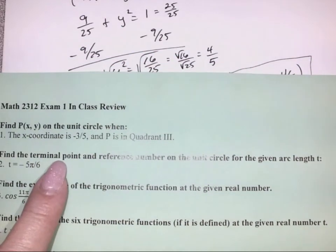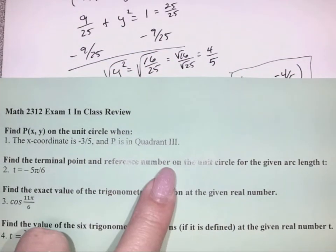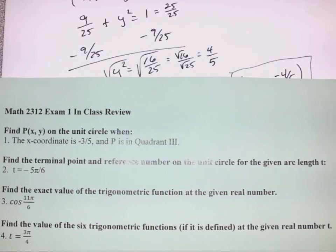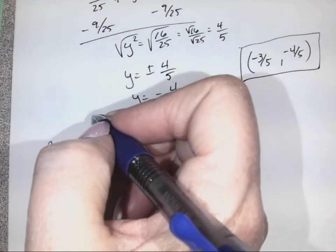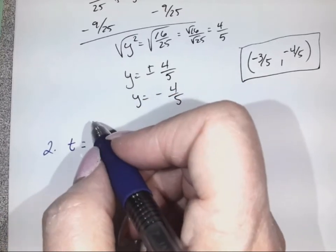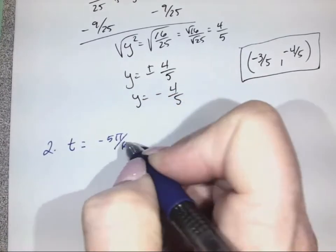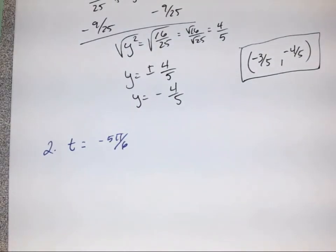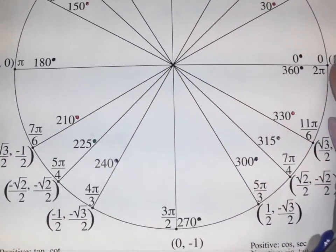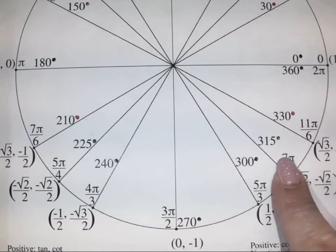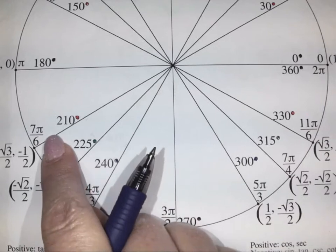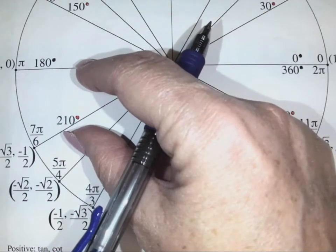Number 2: find the terminal point and reference number on the unit circle for the given arc length of T. For number 2, we are given that T is equal to negative 5π over 6. We're looking for the terminal point and the reference number. The reference number is the shortest distance back to the X axis. If we have a negative angle and we start here going negative, negative 5π over 6 is going to land us over here, and our shortest distance back to the X axis is right here.